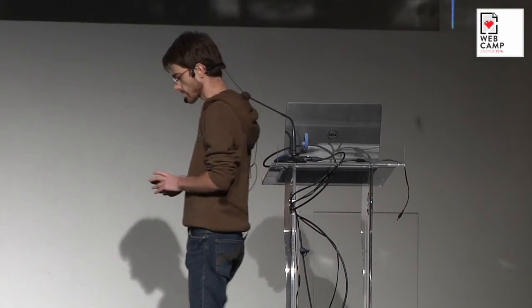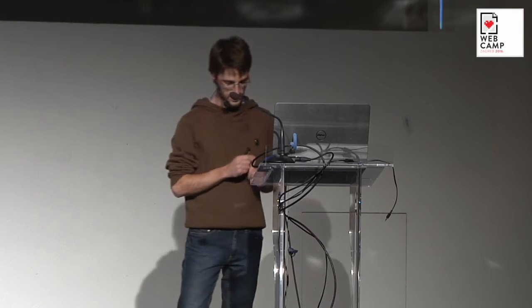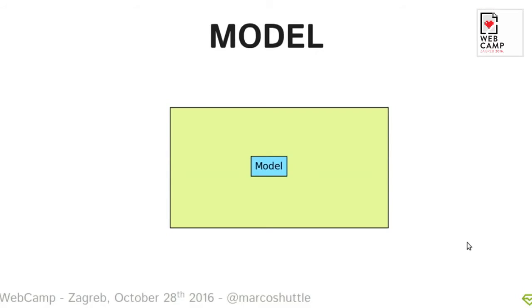I'll tell you how this application is architected. I'm using the Elm architecture — a pattern that emerges naturally while writing Elm applications. Its main concern is to separate the concerns of your application: the state of your application, how we render that state to the screen, and how we can interact with and change that state. So let's start with the most important thing: the model. How do we model our application? The model needs to be at the center of our application.